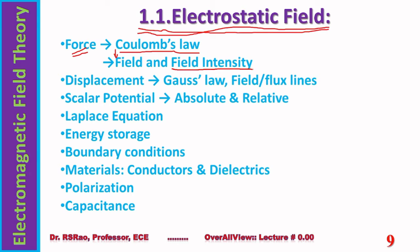While in the field, field intensity is introduced and an expression for it is derived from Coulomb's law. Then we move to displacement — a new concept. There are two entirely new ideas in field theory: field and displacement. In electric fields it is called displacement; in magnetic field theory it is called flux. The concept of displacement is associated with Gauss's law, through which displacement is introduced along with the concept of flux lines.